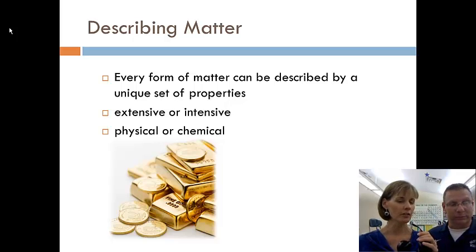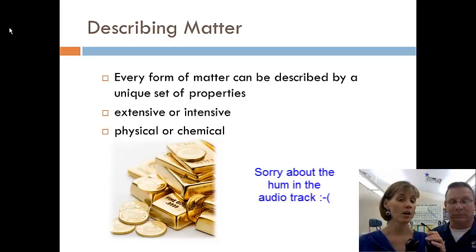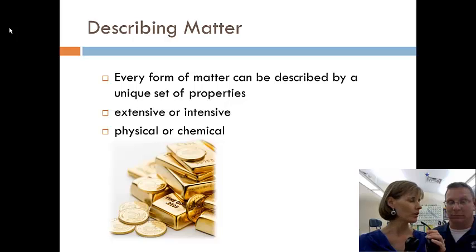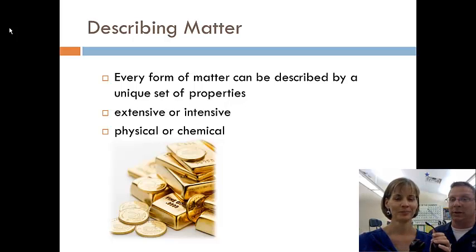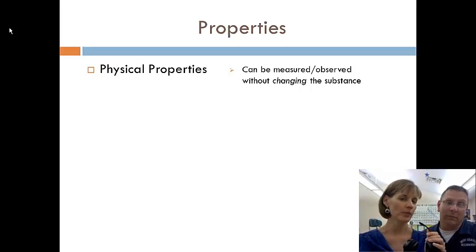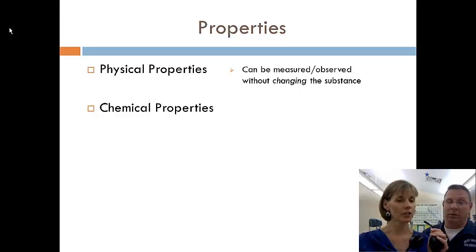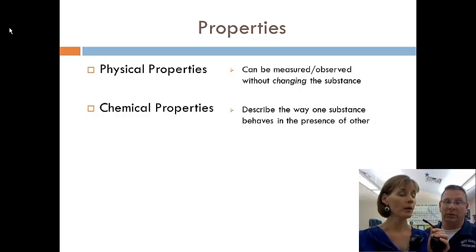So now we have two other terms up there, physical or chemical. I did a quick check with my students the other day, and they seem to know a little bit about physical and chemical. They must have had some awesome ninth grade science teachers. Can you give me an example of a physical property? Well, with respect to gold, it's a solid at room temperature. If we can measure or observe something without changing what the substance is, we have classified that as a physical property. And so chemical, we have how one substance behaves in the presence of another.